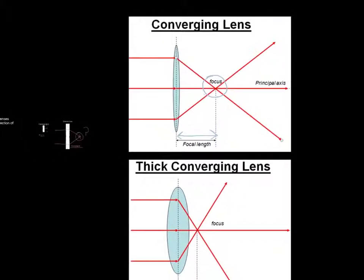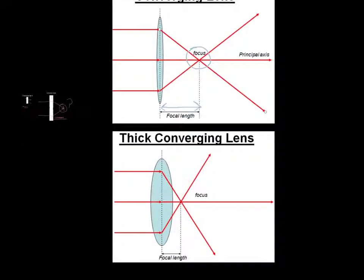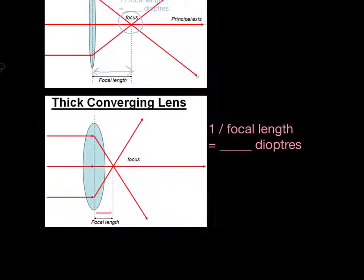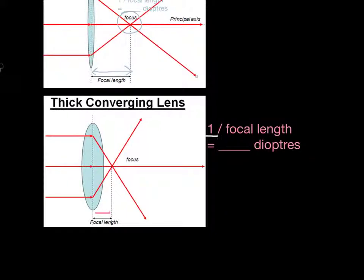Let's look at a thicker lens now. Look at the focal length on this thicker lens — it's much shorter. And this tells us something about the lens: it tells us that it's more powerful. The shorter that distance, the more powerful a lens, or the greater ability it has to bring things into focus. This applies to your eyes and to telescopes. We can work out the strength of a lens using a simple formula: 1 divided by the focal length — that's the length from the centre of the lens to the point at which the light beams are focused.